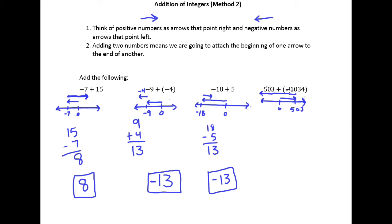So again, I'm backtracking along my 503, so I know I need to find the difference of the two numbers. And what I get is 531. But it's very clear that the answer should be negative because I end up in negative territory.